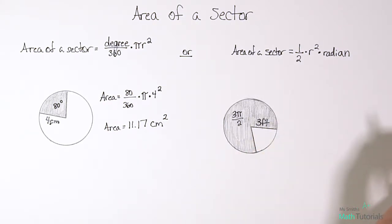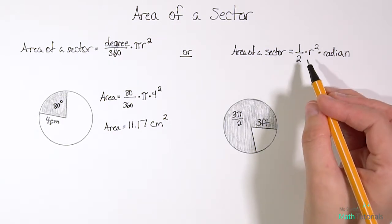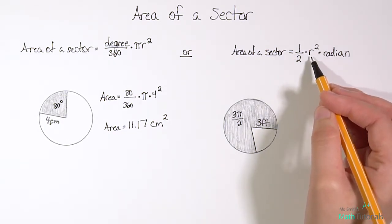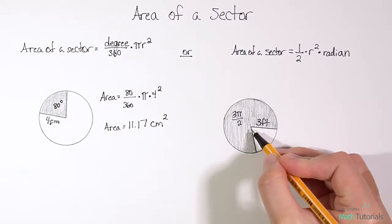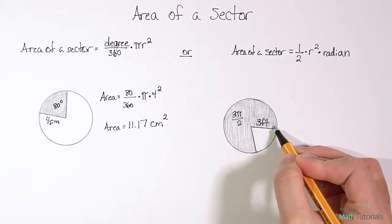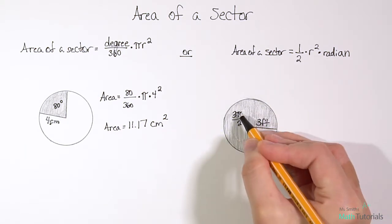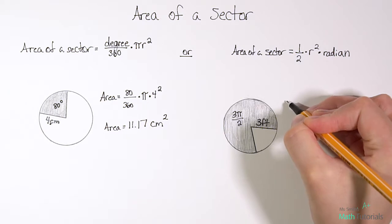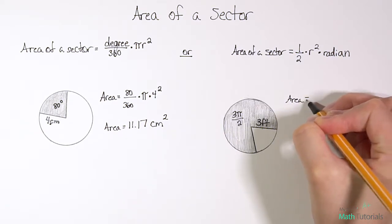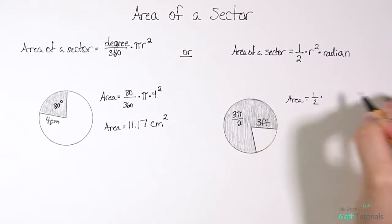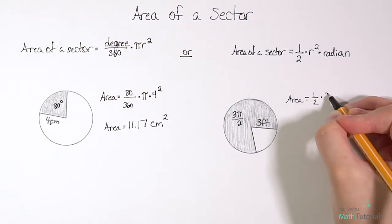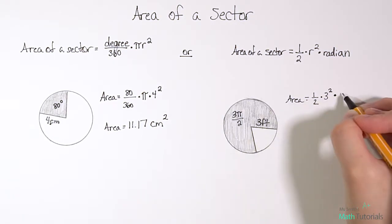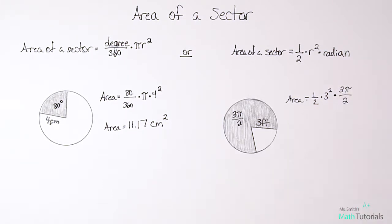So we're going to follow the same type of steps, just this time our formula is different. So this time the formula is 1 half times r squared. Again, r is that radius, which here it told us is 3 feet, times the radian. So 3 pi over 2 is our radian. So we would write that as area equals 1 half times radius squared, so 3 squared, times the radian, which is 3 pi over 2.